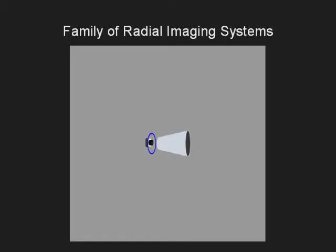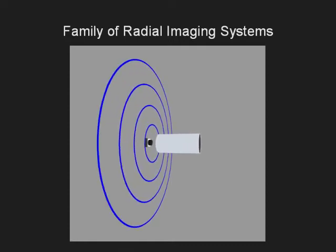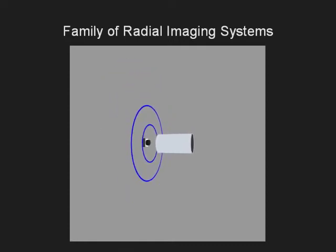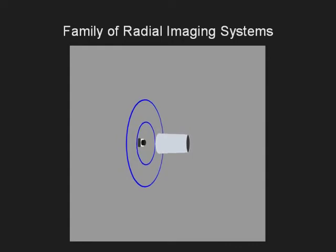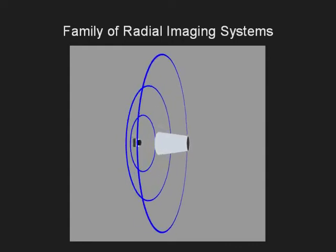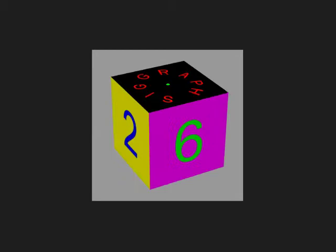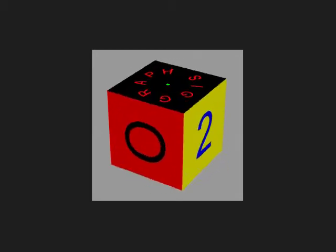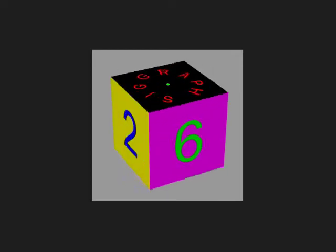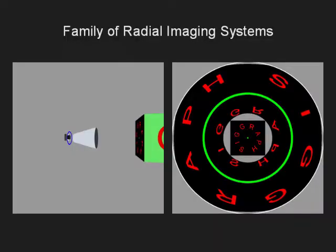By varying the parameters of the mirror and its distance from the camera, we obtain a complete family of radial imaging systems. Notice that many configurations have multiple circular loci of virtual viewpoints due to inter-reflections within the mirror. Consider a cube with SIGGRAPH written on the top face and 2006 written over its side faces. In this configuration, we see that the top face is seen multiple times, which allows us to recover structure from a single image.